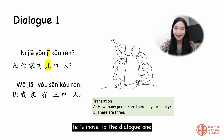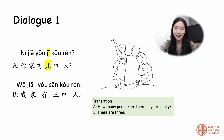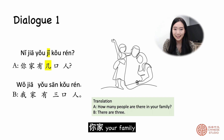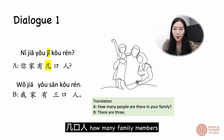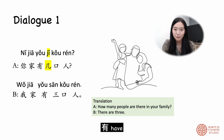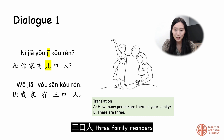Let's move to dialogue one. 你家有几口人? 我家有三口人。 你家 — your family. 有 — have. 几口人? — How many family members? 我家 — my family. 有 — have. 三口人 — three family members.